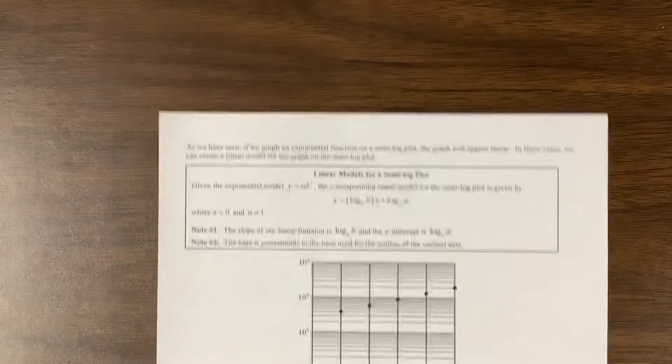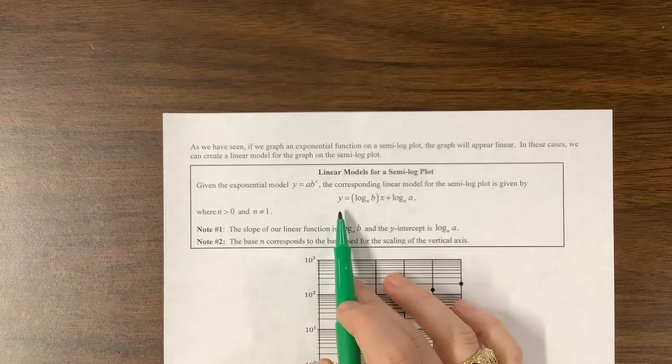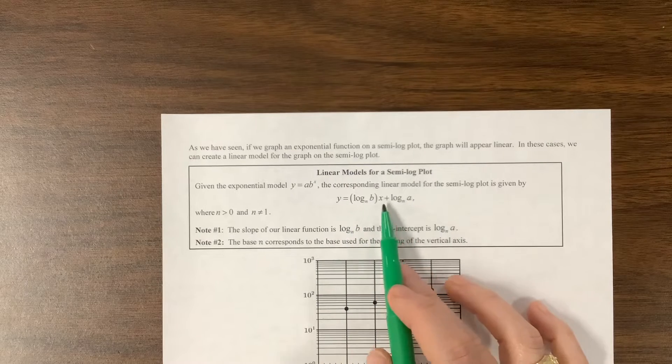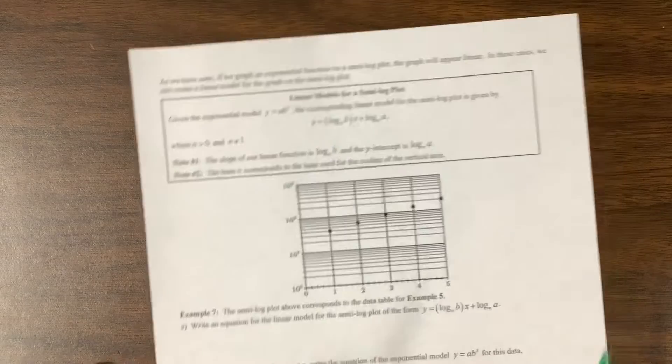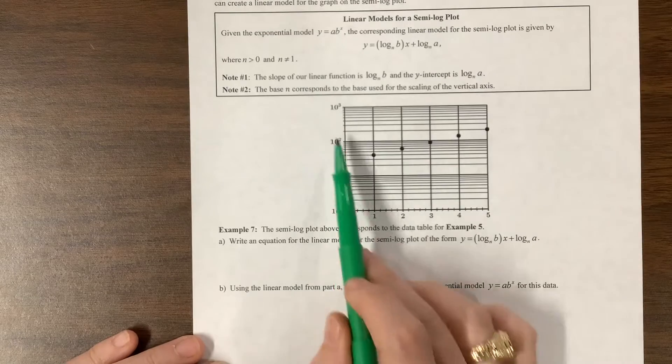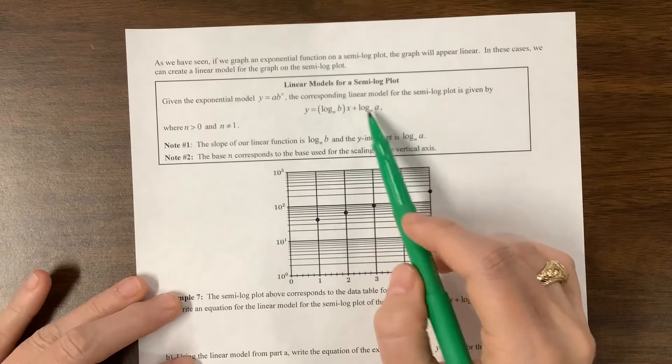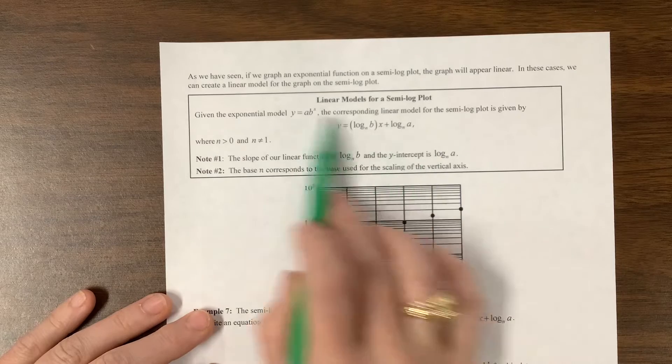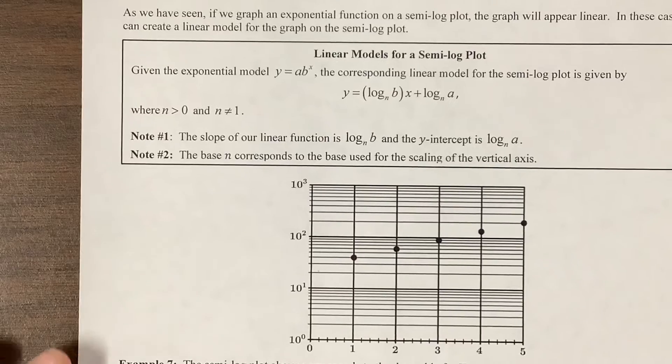Okie dokie. Okay, so now we can use this formula, y equals log base n of b times x. So the average rate of change, the slope, becomes this log base n of b, and our n value becomes the scale here. So if I'm scaling by 10, then I'm just going to use log base 10. And then my y-intercept is log base n of a, and then this b comes in here, this a goes in there.